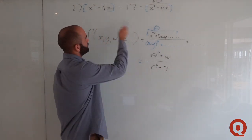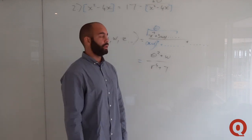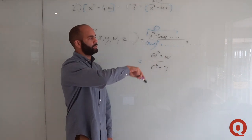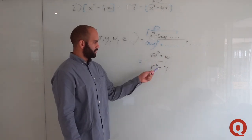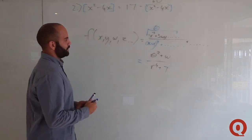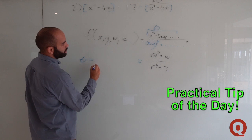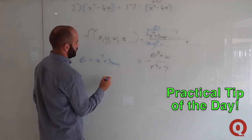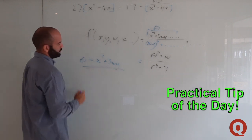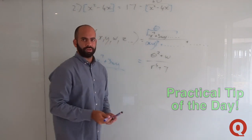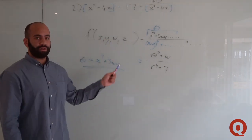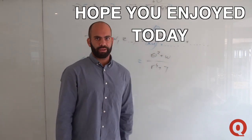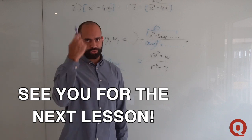Doing a substitution — say letting a complex expression equal theta — condenses it into something bite-sized, like theta² + omega/r⁴ + 7. The K method solves quadratic equations quickly, but the substitution technique scales all the way up to advanced mathematics. Simple methods like this are really powerful, even at matric, varsity, and beyond. Use it when you need it.